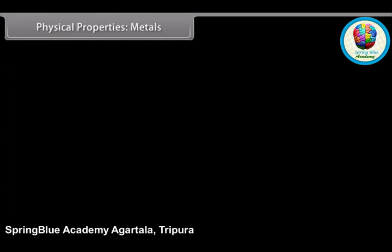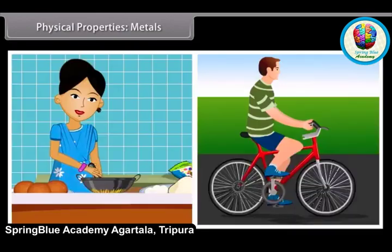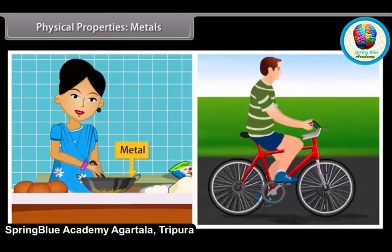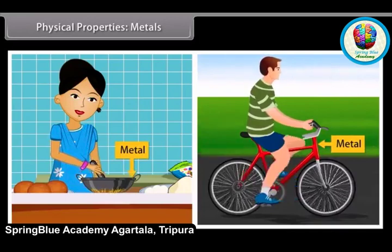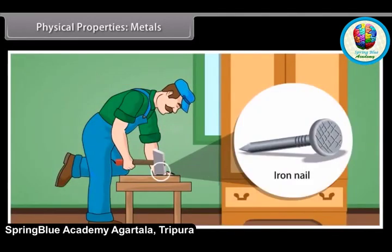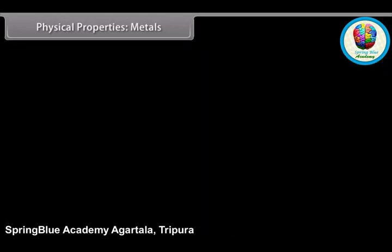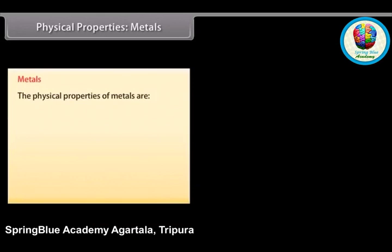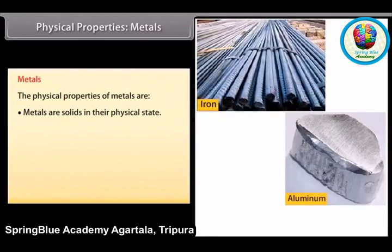Physical properties — Metals. You come across a lot of metals and non-metals in your day-to-day life. For example, the hammer that you use to fix nails is a metal, and the nail made of iron is also a metal. Metals are solid at room temperature — for example, iron and aluminium. Only mercury is a liquid metal.